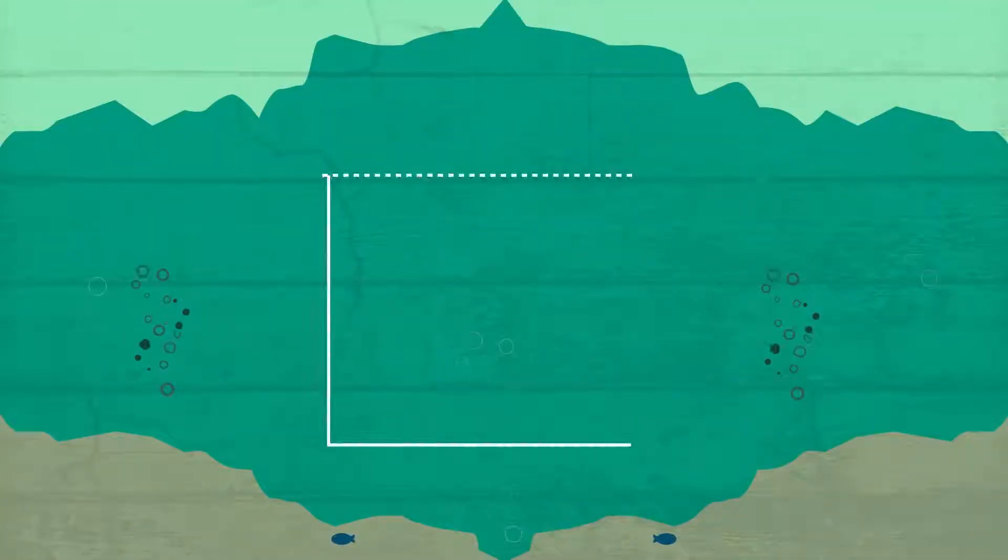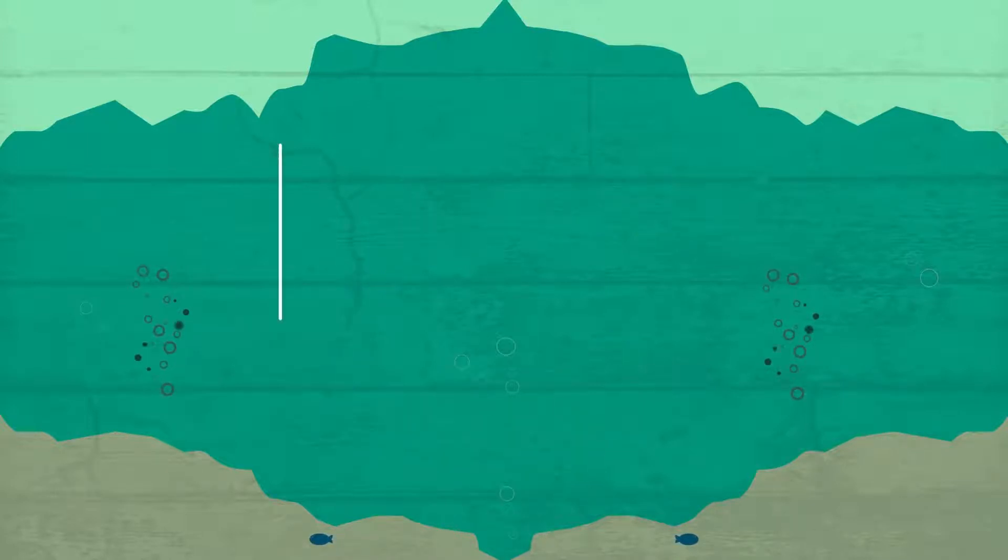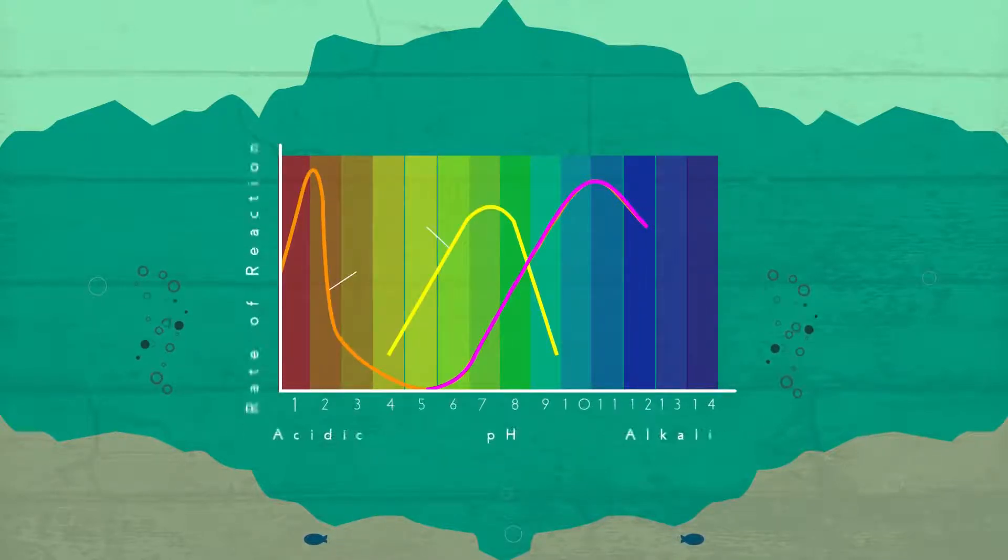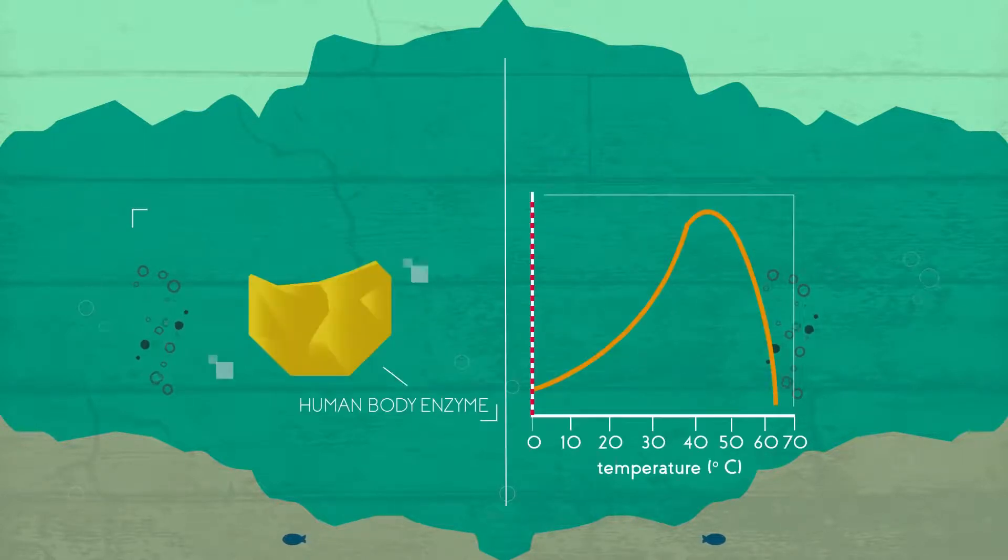So from this video you should know that enzymes have optimal conditions under which they operate. Different enzymes have different preferred conditions, with some preferring acidic conditions and others preferring alkaline conditions. Temperature is also an important factor.